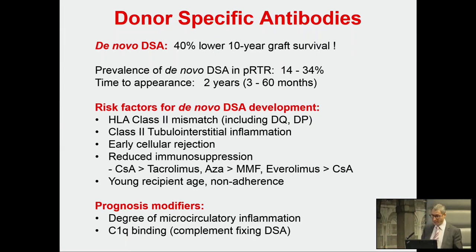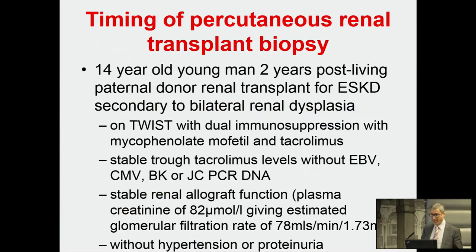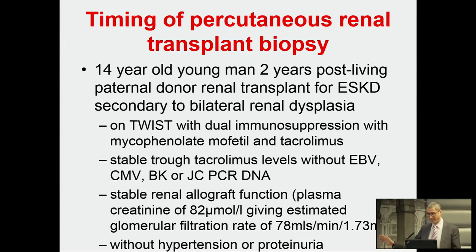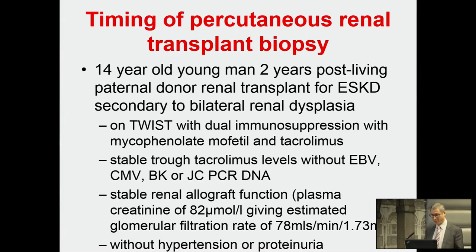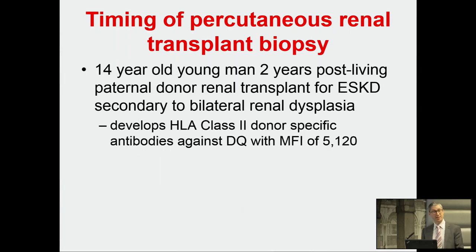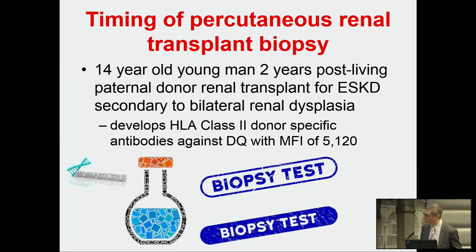Let me give you an example. A 14-year-old young man, two years post-living donor transplant, on the TWIST protocol — basiliximab two doses given, prednisolone weaned off at five days, on MMF and TAC. He has stable trough tacrolimus levels, no viremia, creatinine stable at 80, no blood pressure issues or proteinuria — and then he develops DQ antibodies. So what do you do? In 2023, we're thinking about whether there are biomarkers, or do you just go for a biopsy?